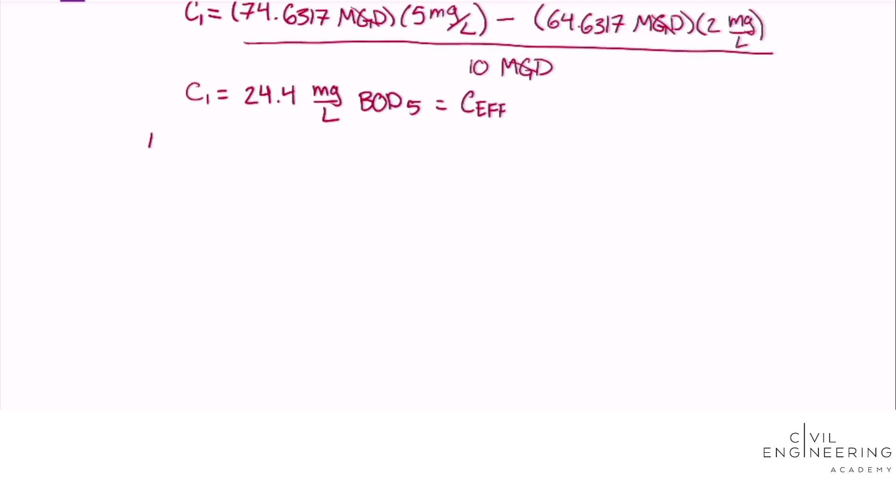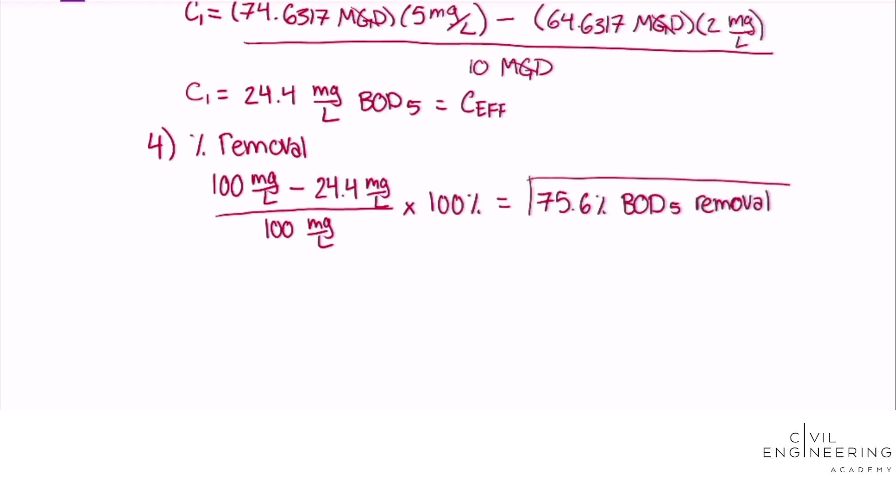Our last step is to find the percent removal and that will be the starting influent which is the 100 mg per liter minus the effluent which is 24.4 mg per liter over the initial influent of 100 mg per liter times 100% and that will give us a whopping 75.6% BOD5 removal rate. And that is our answer.